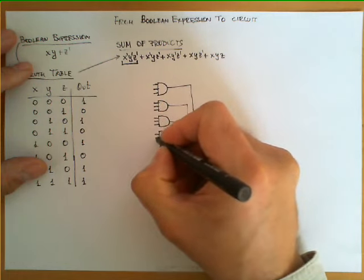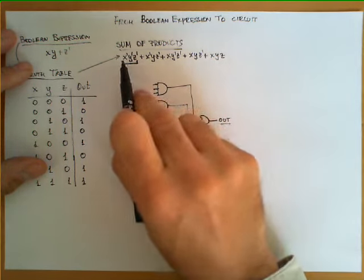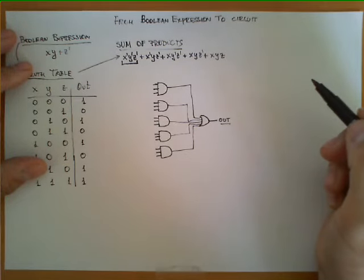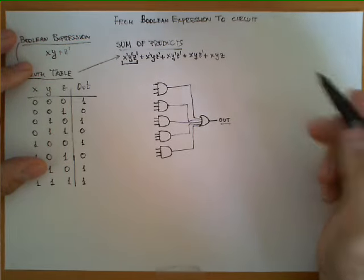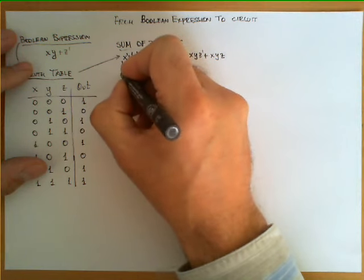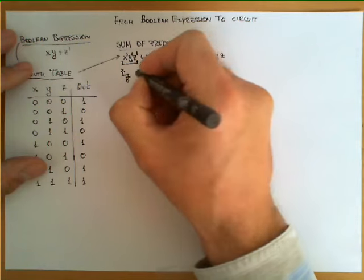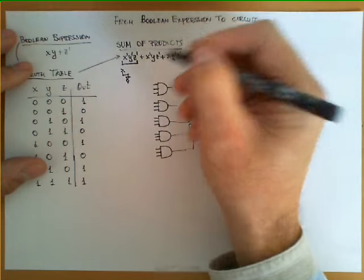But as we can see for each one of them we are going to have a connection to either a symbol or its negation. So one possibility is to say we are going to have the input x here but also we are going to negate this value to create x bar.